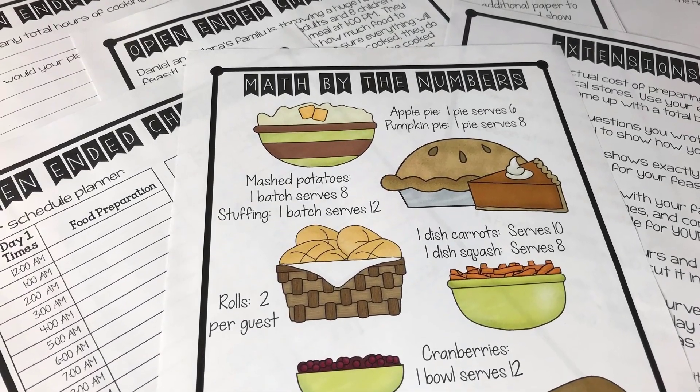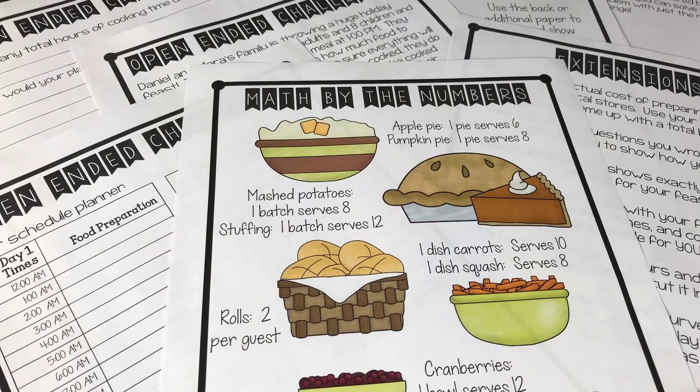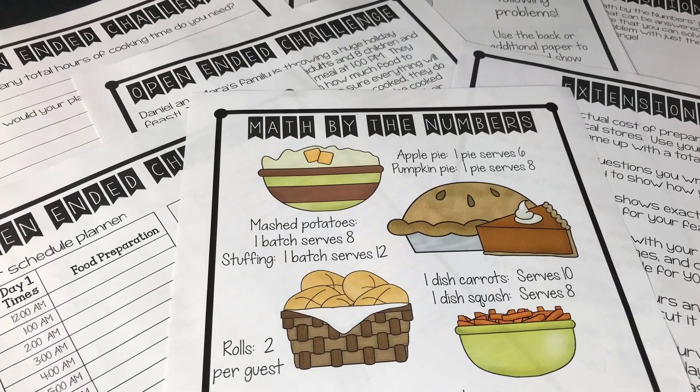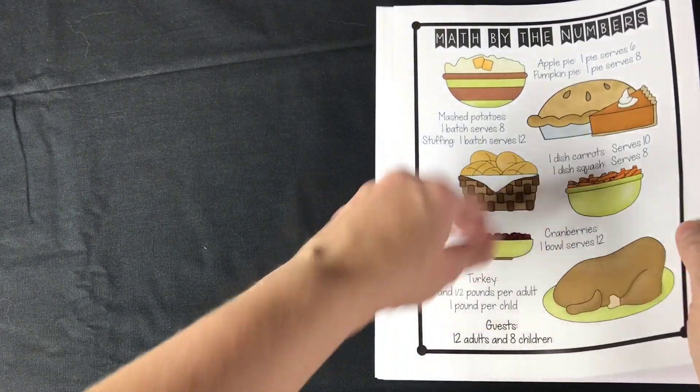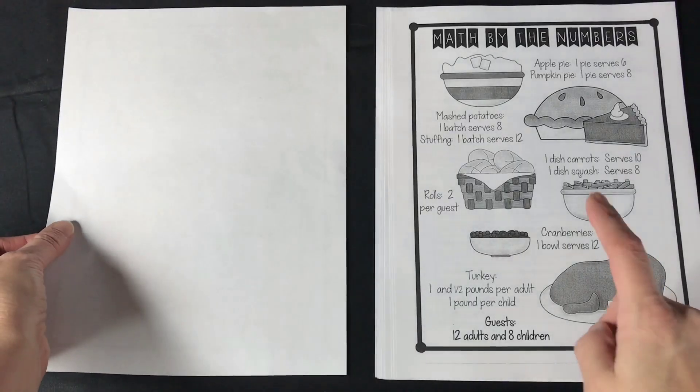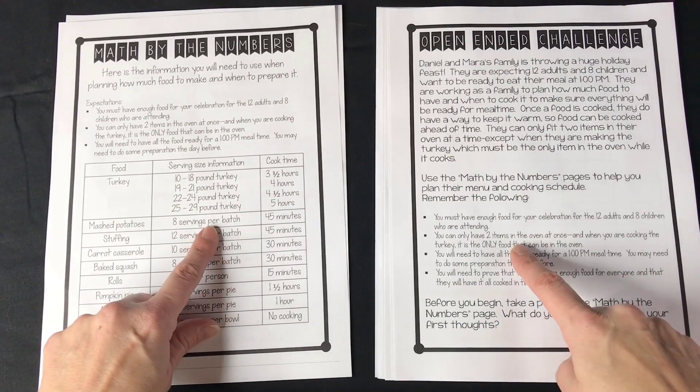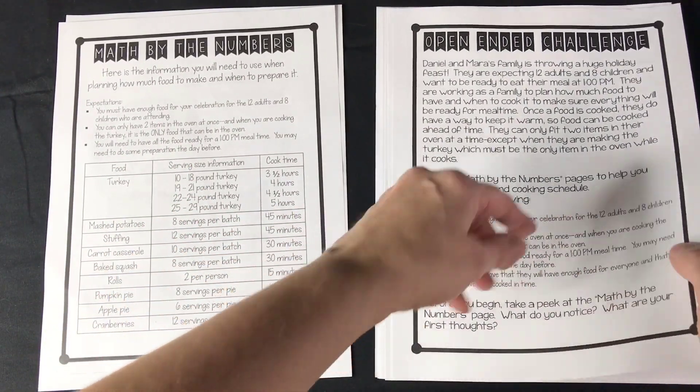I just wanted to give you a quick overview of how my thinker task resources work so you can see all the different components that come with them. To begin with, you'll notice a cover sheet full of math data that students will use throughout. There's also a scenario that they have to read and understand to figure out what they are actually solving.